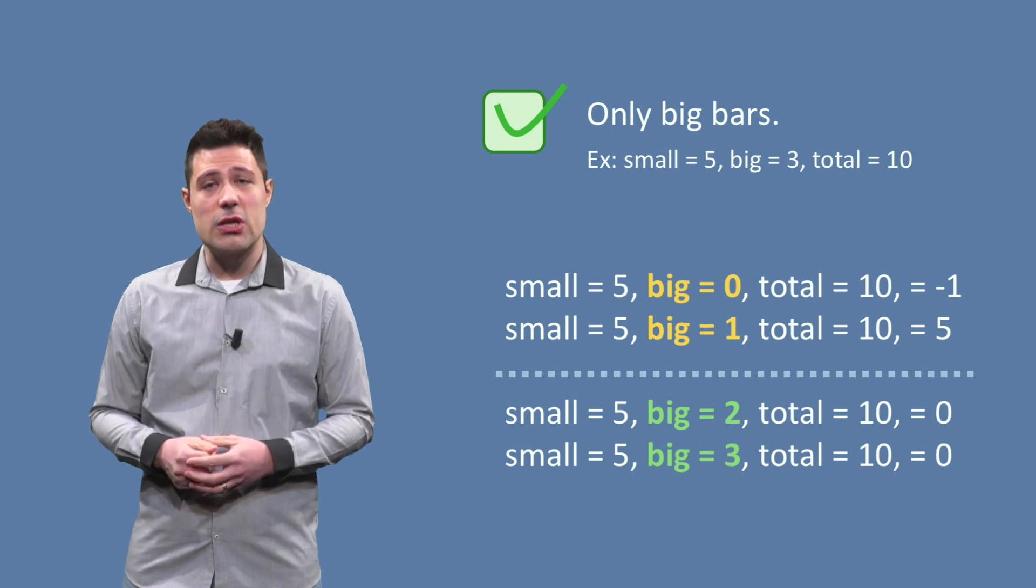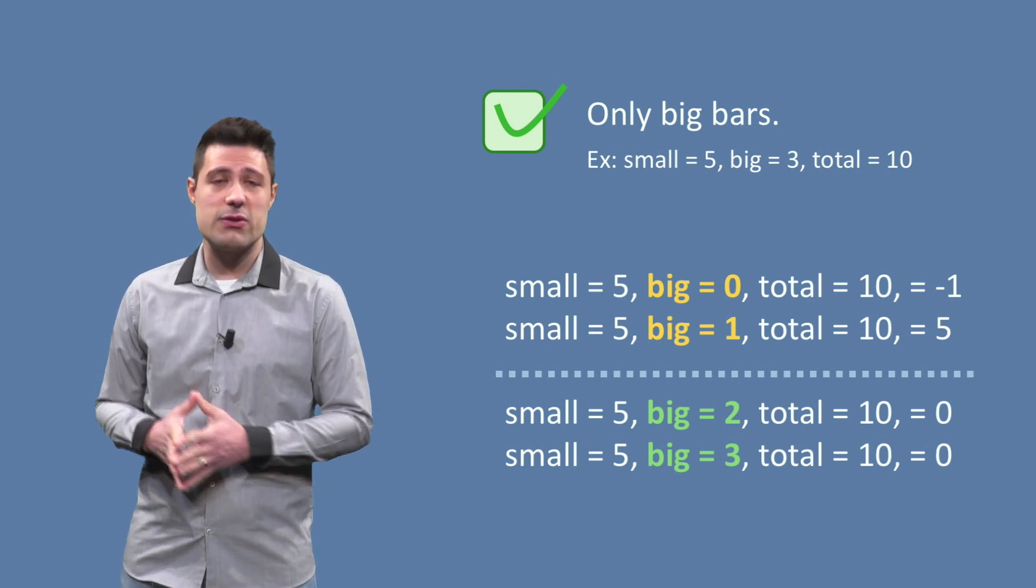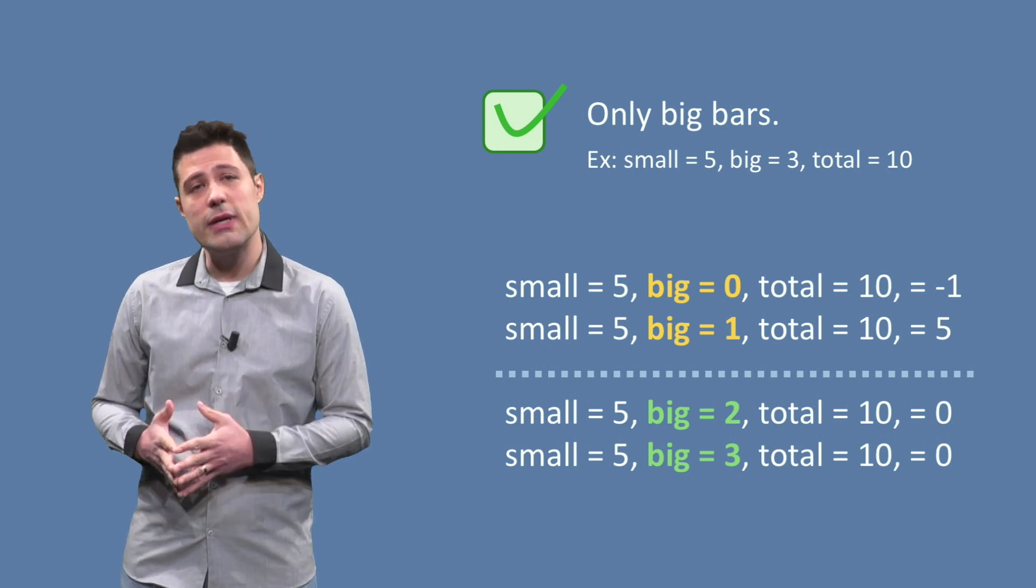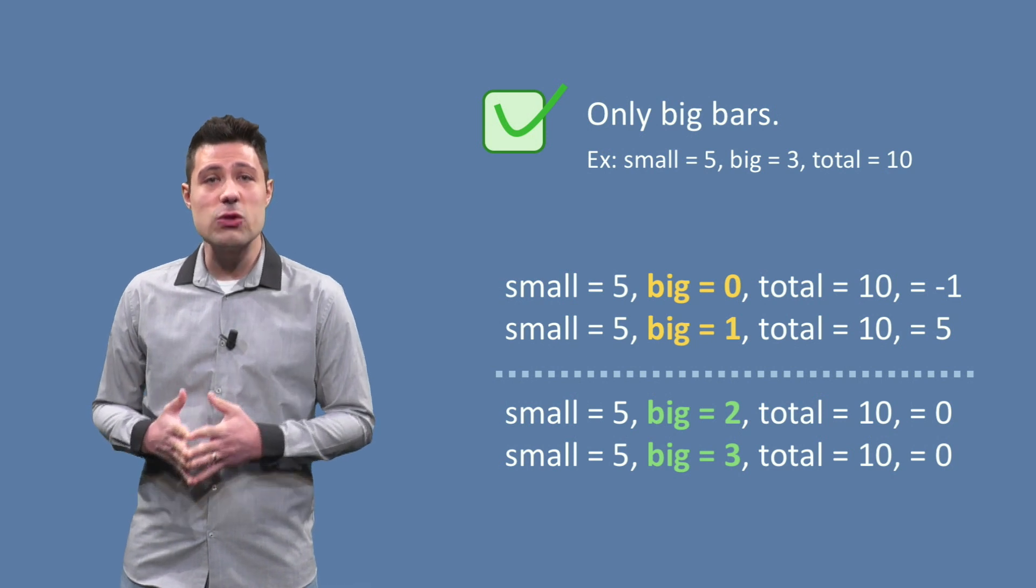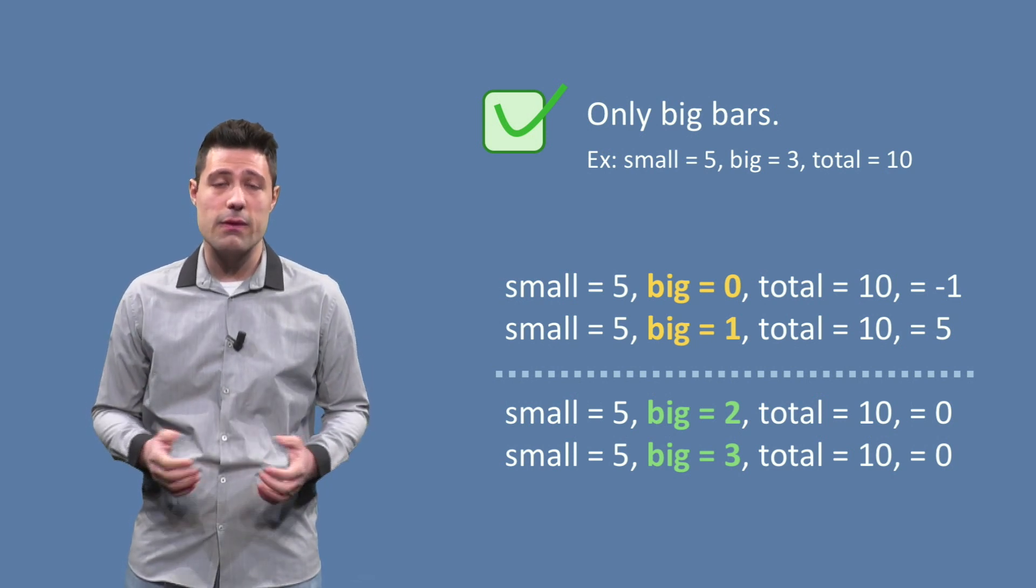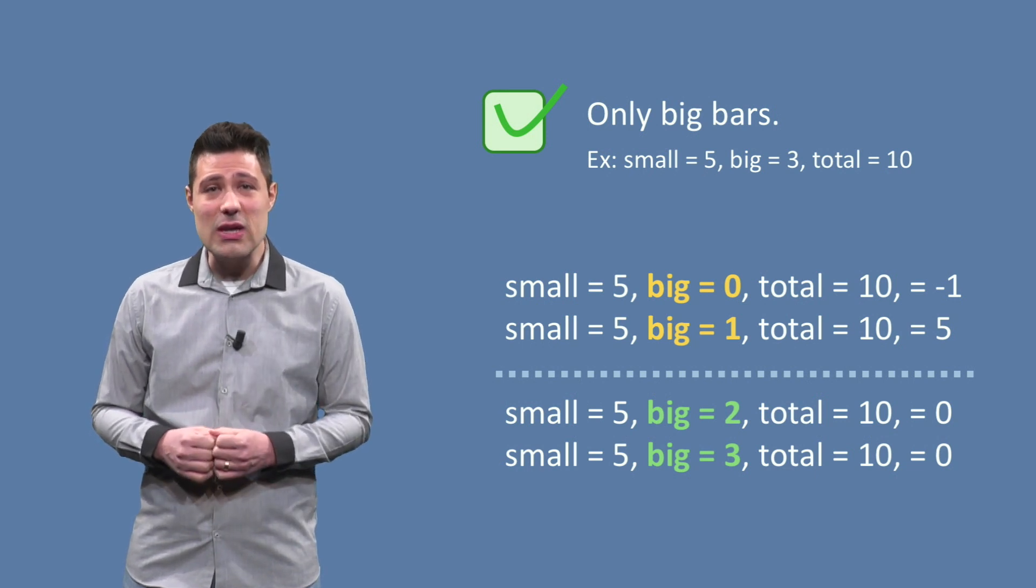For the next partition, no need for small bars, we have as a particular instance small equals 5, big equals 3 and total equals 10. If we keep small equals 5 and total equals 10 as starting point, we then see that the boundary happens when big is in between 1 and 2.